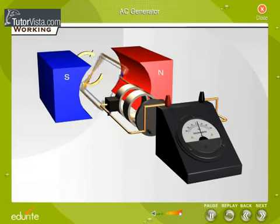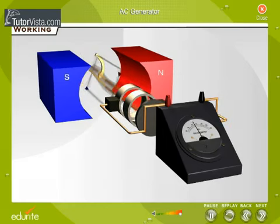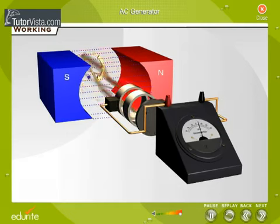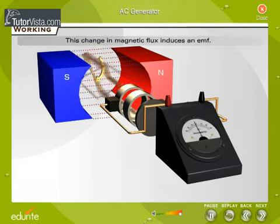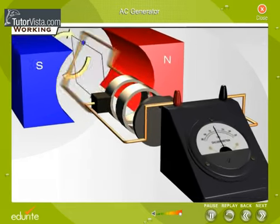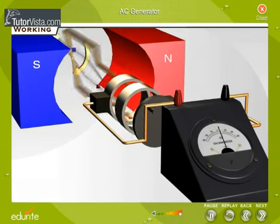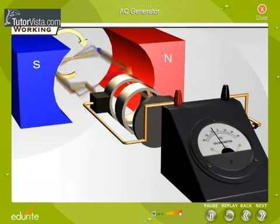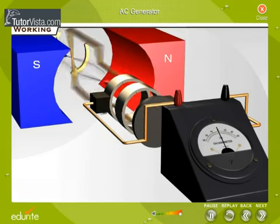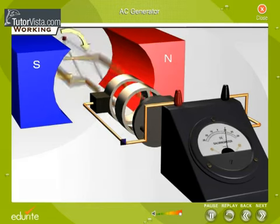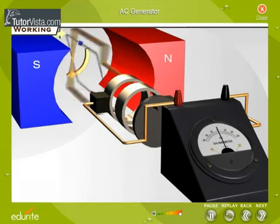Working: As the armature rotates about an axis perpendicular to the magnetic field, it keeps on changing its relative orientation with respect to the field. Thus, the flux keeps on changing continuously with time. This change in magnetic flux induces an EMF. If the outer terminals of the armature are connected to an external circuit, an electric current flows through it. The deflection of the galvanometer needle indicates that an EMF is induced.